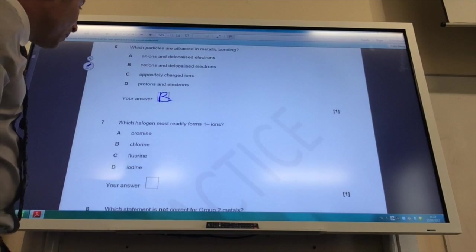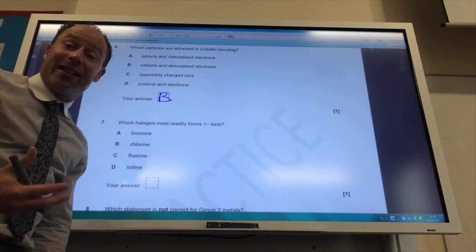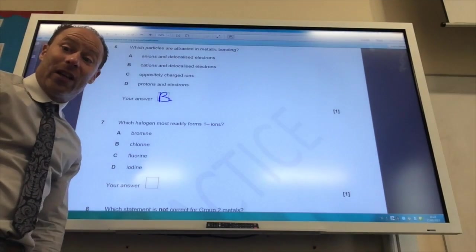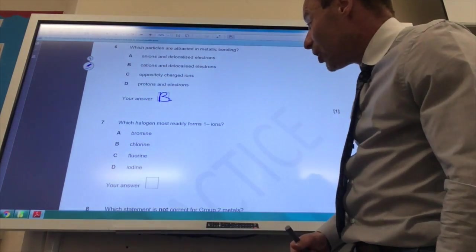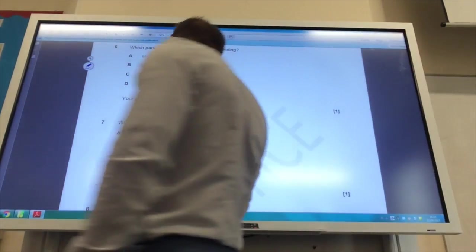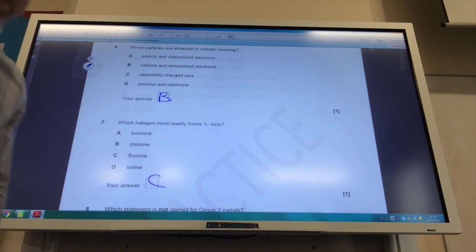Question 7. Which halogen most readily forms minus 1 ions? This is the most reactive halogen. You know that reactivity for group 7 decreases down the group, so the one at the top of the group is fluorine. The answer to 7 is C.